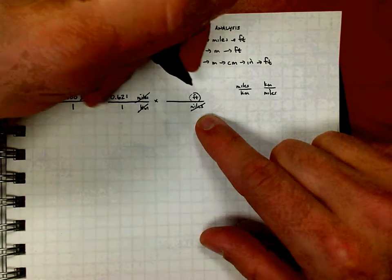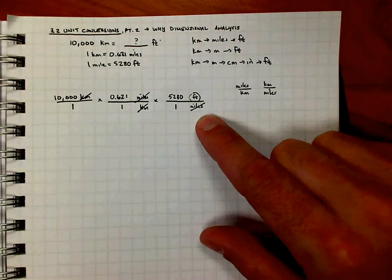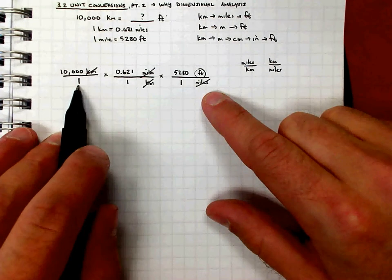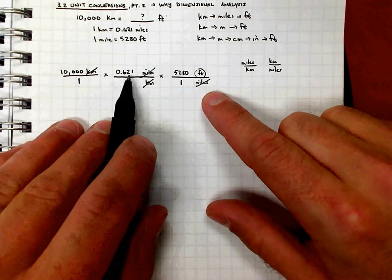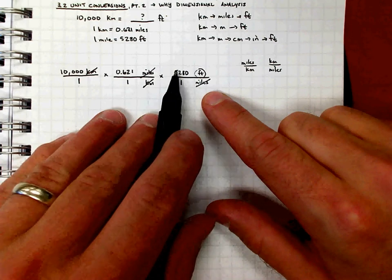By the way, I know that 5,280 feet are the same thing as one mile. So now I can put it all together. Here's what I know. I'm going to take 10,000 over 1. I'm going to multiply it by 0.621 over 1, which is just 0.621. And then I'm going to multiply by 5,280.